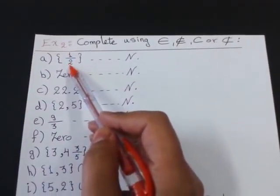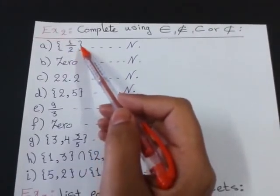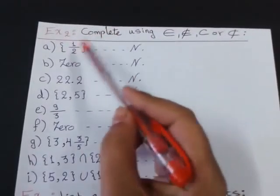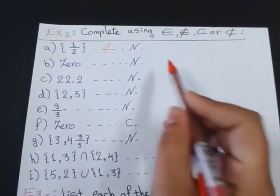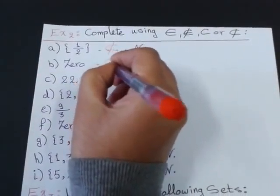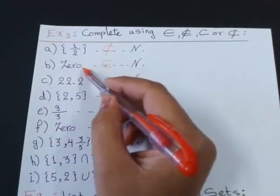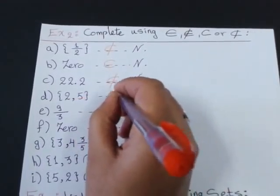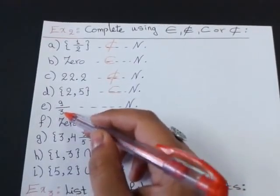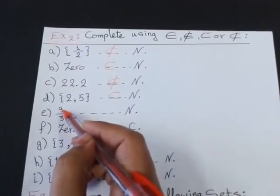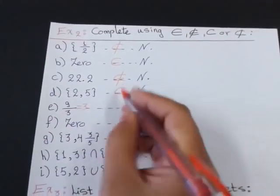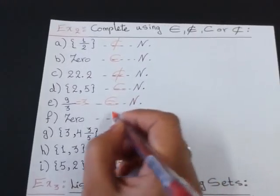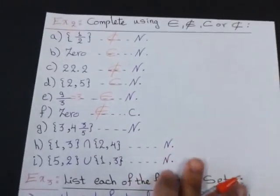The set of half. Half is element or set? This is set. So, I will put subset or not subset. Half inside the natural number? No, it's a fraction. So, it's not subset. Half element, not element because it has no braces. 22.2. Not element. 2 and 5. Subset. 9 over 3. Let's check. It has an answer. Yes. 9 divided by 3 equals 3. Element to N. 0 to C. 0. Element to counting numbers? No. Not element. Because the smallest counting number is 1.